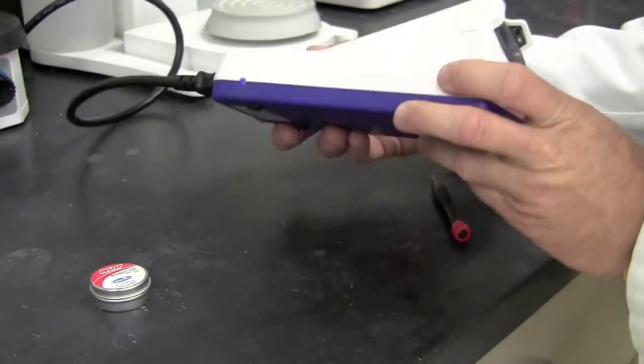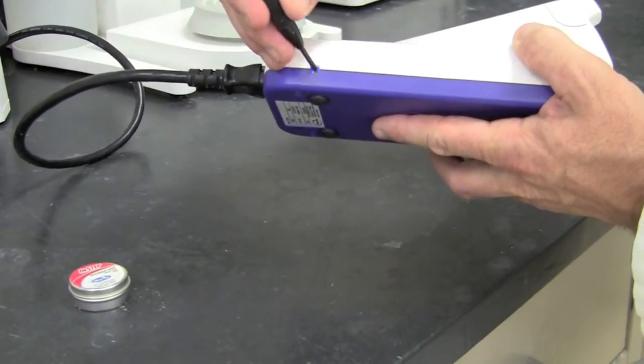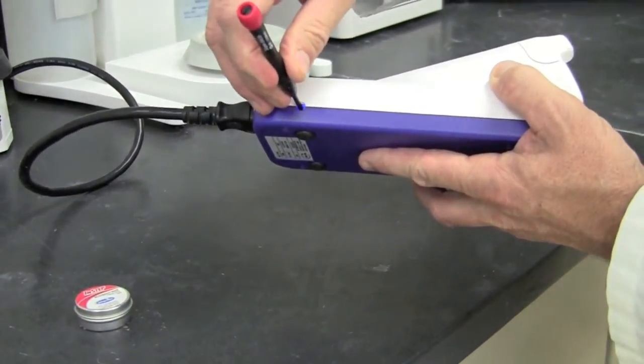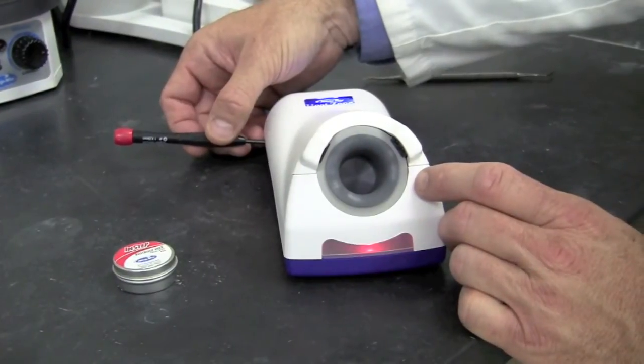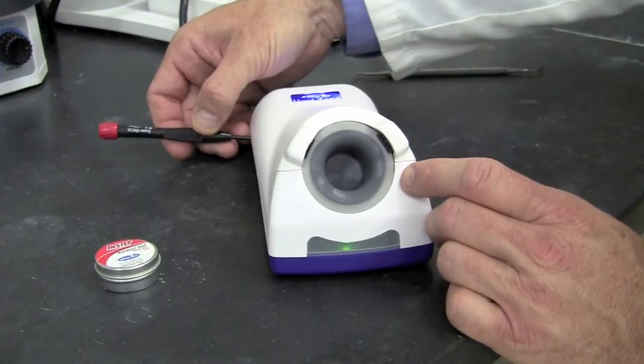The adjustment port can be found on the left hand side of the unit and it will require a small Phillips head screwdriver to make the adjustments. Now I'm adjusting the sensitivity control to the left to make the unit less sensitive to show a solid green light.